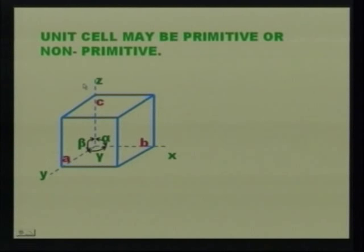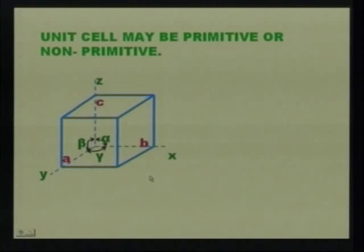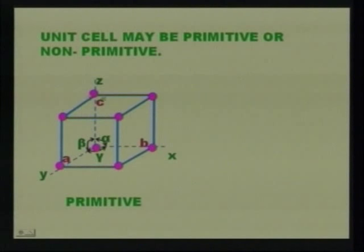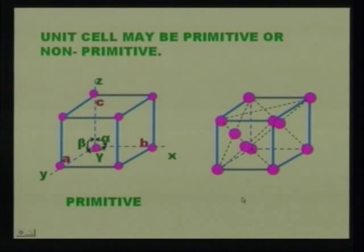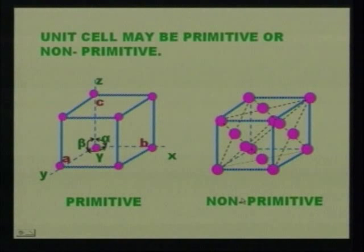The primitive unit cell is constructed in a cubic form where a = b = c and alpha = beta = gamma = 90 degrees. The atoms arrange themselves at the corners of the cube — this is called a primitive unit cell. In the non-primitive unit cell, atoms are also arranged in the interior parts of the cube and on the faces of the cube. This type is called a non-primitive unit cell.